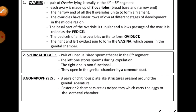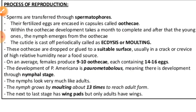The main parts of the female reproductive system are: ovaries, spermatheca, and gonapophyses. The pair of unequal-sized spermatheca are in the sixth segment — the left one stores sperm during copulation and the right one is non-functional; they open into the genital chamber by a common duct. The gonapophyses consist of three pairs of chitinous plate-like structures present around the genital aperture; the posterior two chambers are the ovipositors, which carry the eggs to the ootheca.